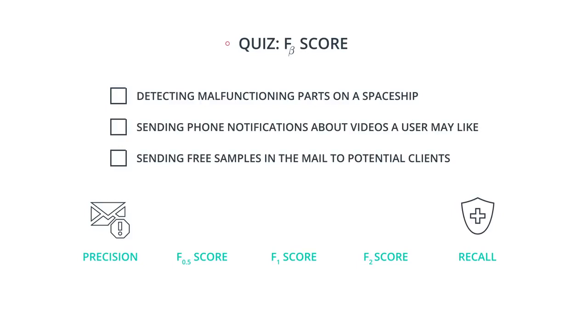And let's say one of them has an F_beta score of F1. The other one is F0.5 and the other one is F2. And which one is which? Enter your answers below.